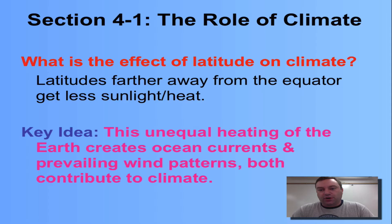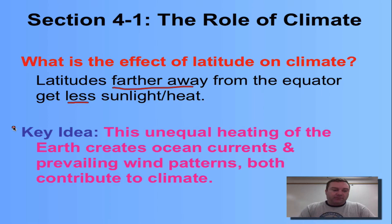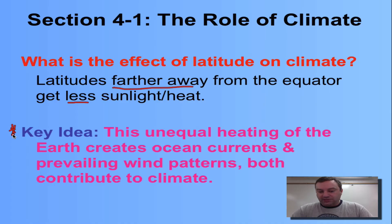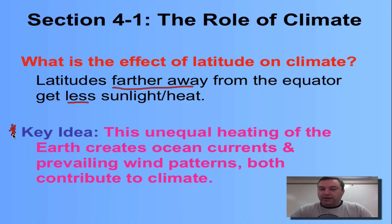So what is the effect of latitude on climate? The farther away from the equator you are, the less sunlight and the less heat you're going to have. The key idea is there's going to be an unequal heating of the planet due to latitude, and that's going to create ocean currents and prevailing wind patterns through a process called convection.